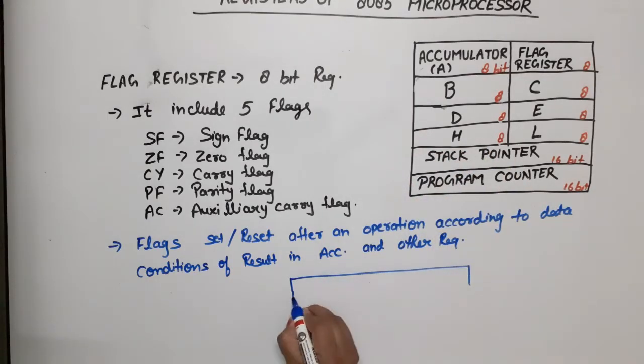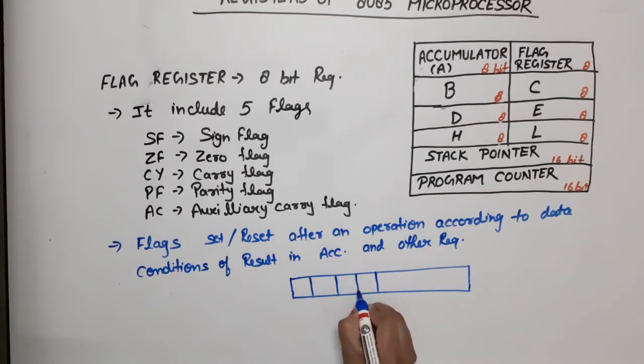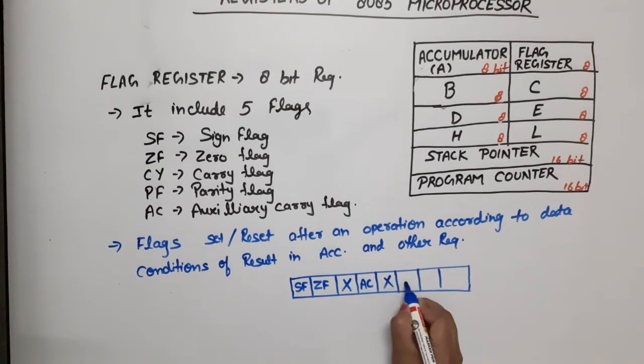You have to make a diagram of the flag register. This is an 8-bit register. In this, first flag is sign flag, then Z flag, then a cross which is don't care, then auxiliary carry, again don't care, then parity flag, then cross, then carry flag. This is the flag register.